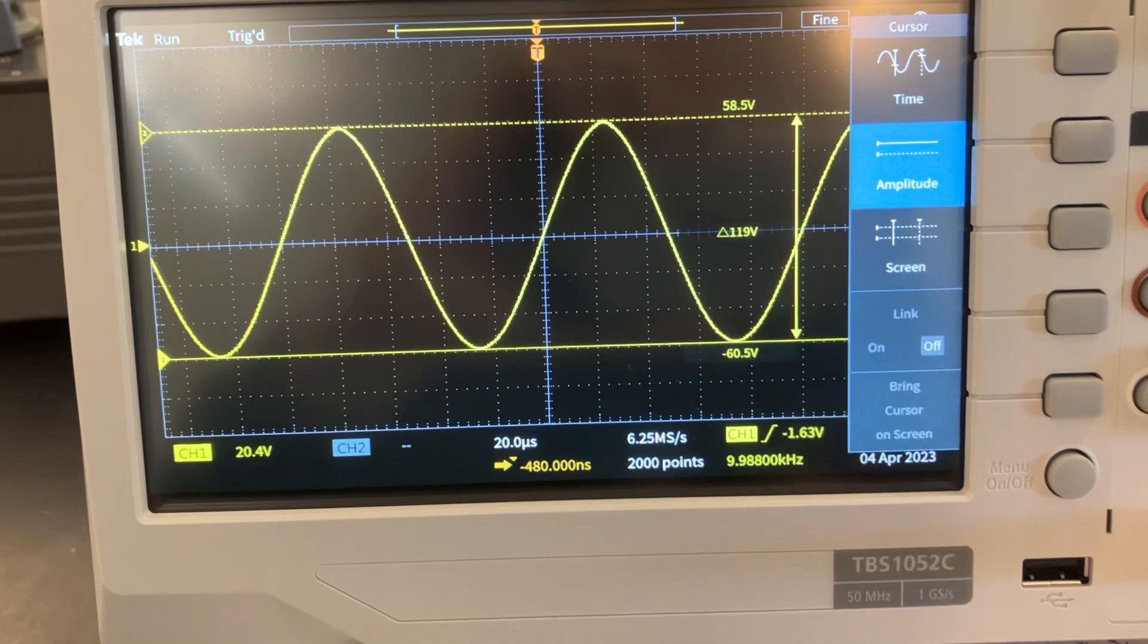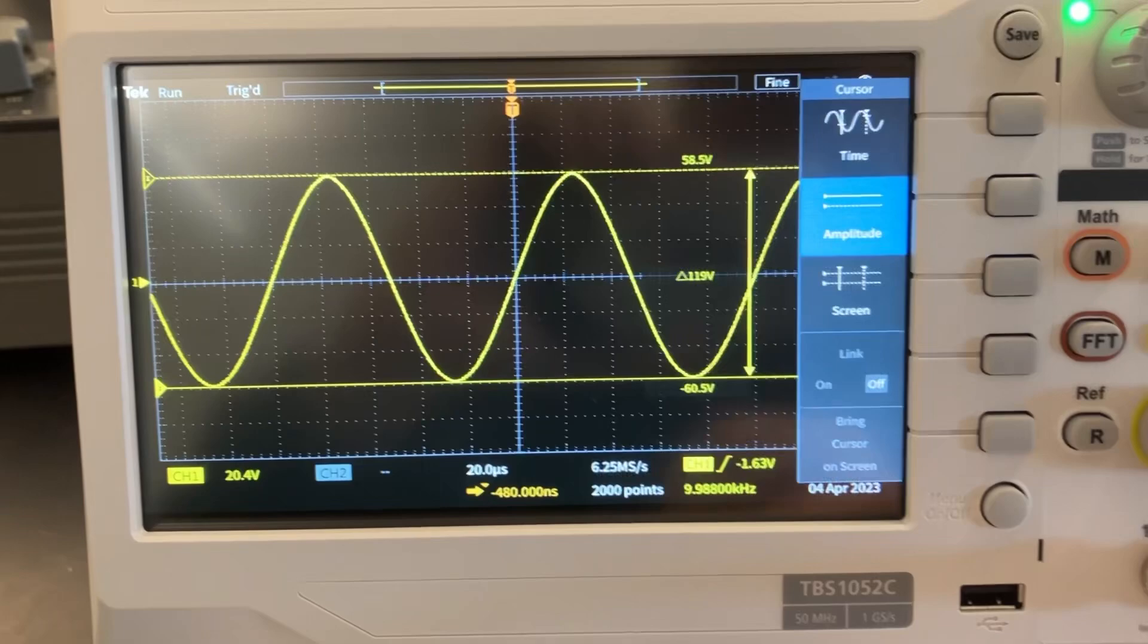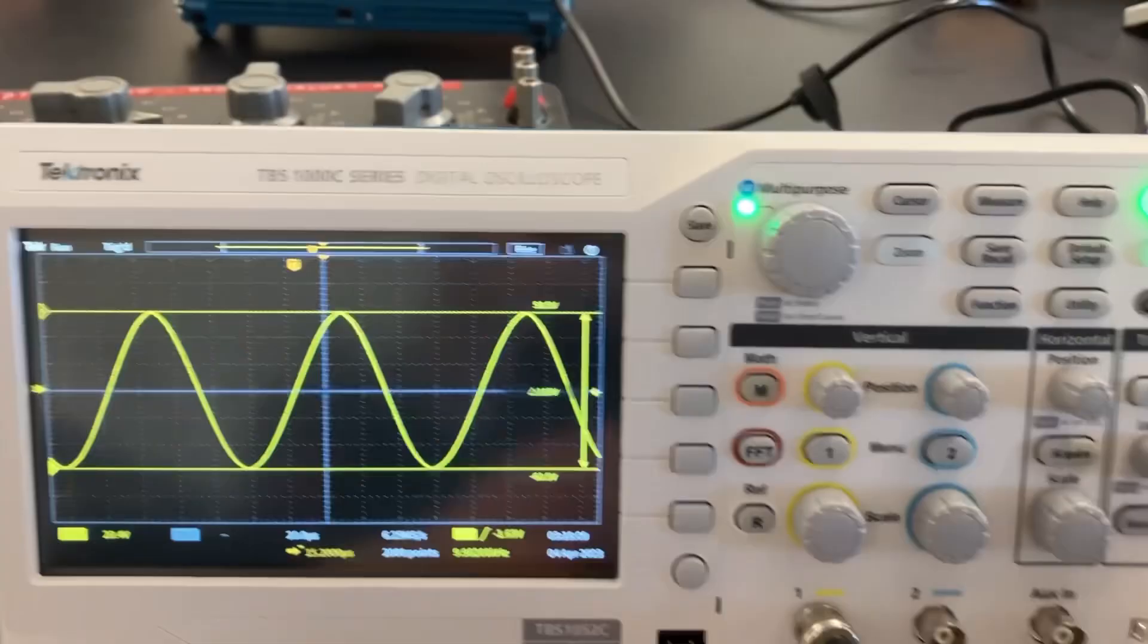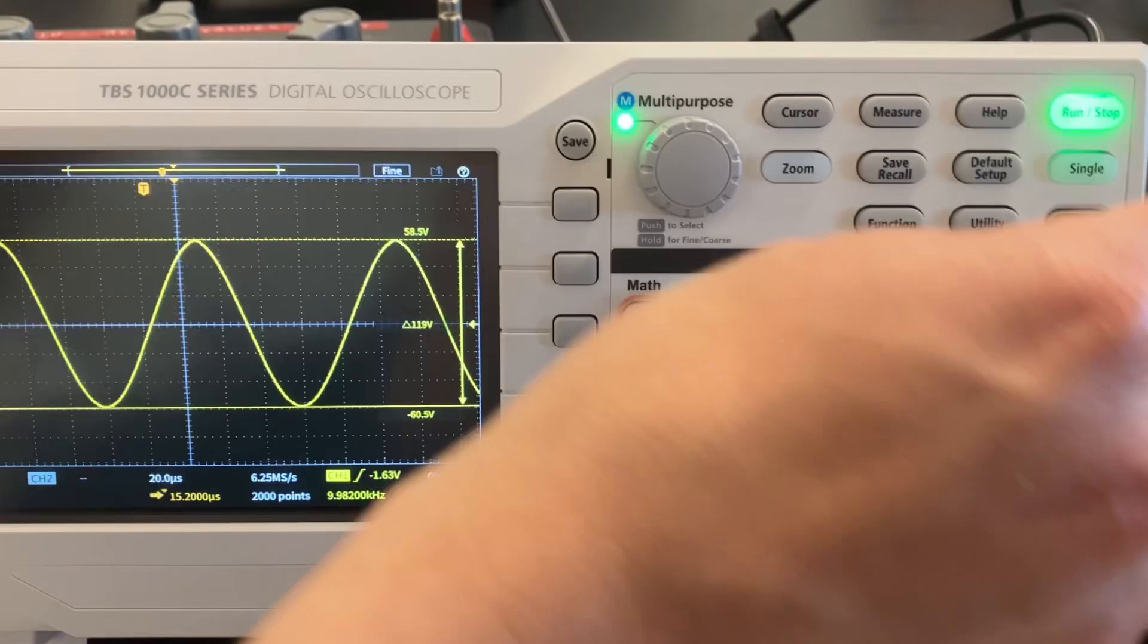The function generator is connected. Now we're going to take this horizontal position control and just slide it until we get to the center.